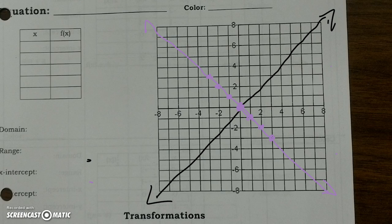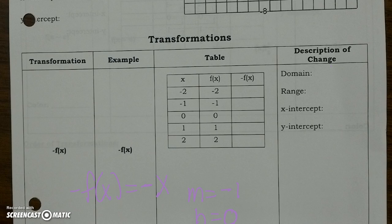Doesn't that look like a reflection? It sure does. Now moving back to the table: when x is negative 2, your y should be at positive 2. When x is negative 1, y is positive 1. When x is 0, y is 0. When x is 1, y is negative 1. And when x is 2, y is negative 2. Don't worry about the middle section of the table — that's just so you can see the difference between f of x and negative f of x.